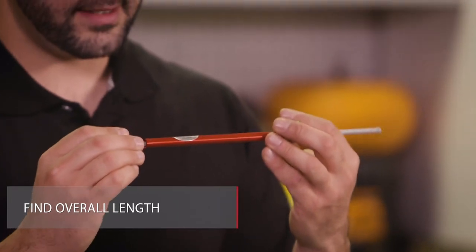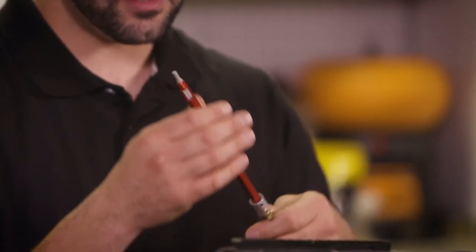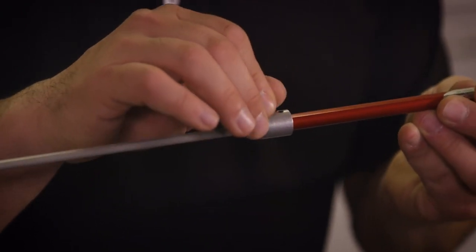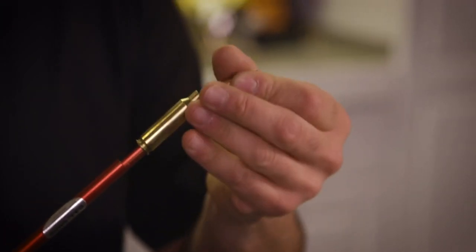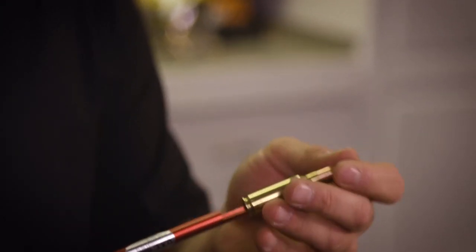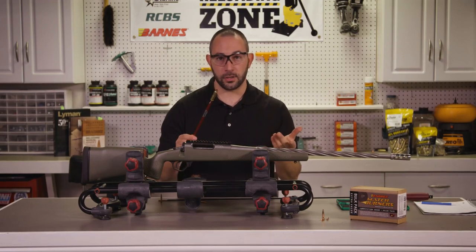The best tool on the market to find starting overall length is the Hornady Overall Length Gauge. This particular device has a main housing with a pusher rod housed inside of it. With a special modified case available through Hornady, you can adapt this tool to find the overall starting length for any cartridge on the market.